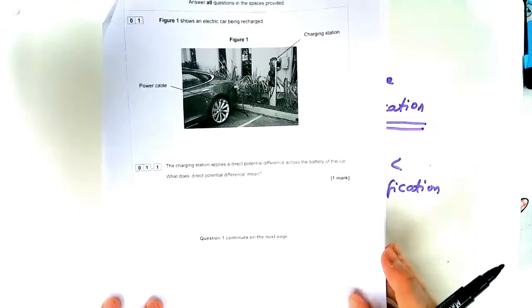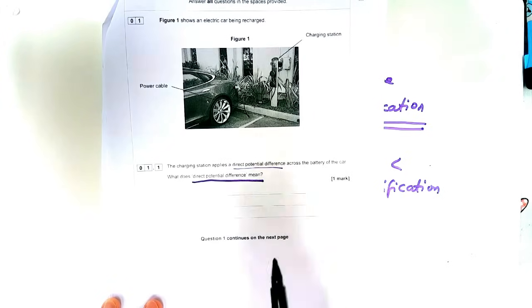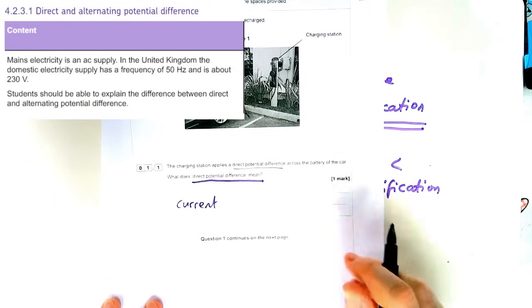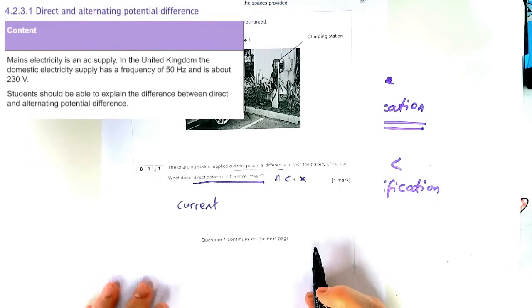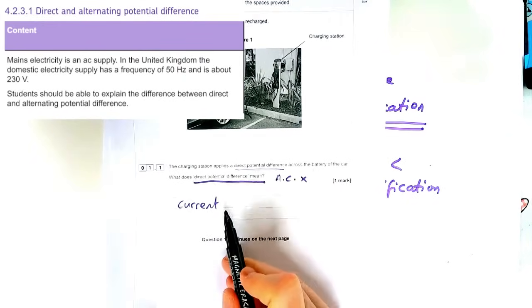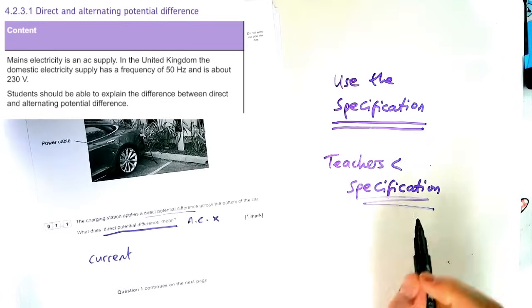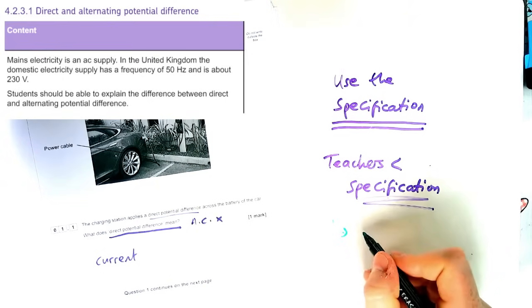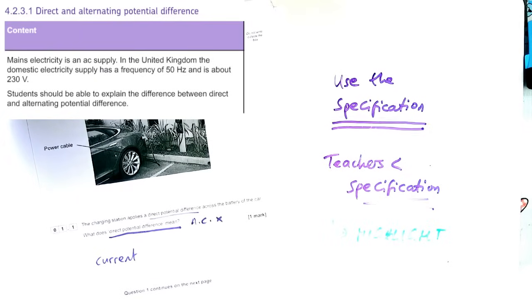So I'll give you an example and this was the first question from a 2021 paper. It says about a car charging station having direct potential difference and then I'll see what direct potential difference means. Now a lot of students, mine included, started talking about current because they had learned about alternating current. However the specification doesn't actually mention alternating current at all. It only mentions alternating potential difference and this was picked up in the examiner's report who said teachers aren't teaching to the specification. So my top tip would be to try and go through the specification as much as you can.